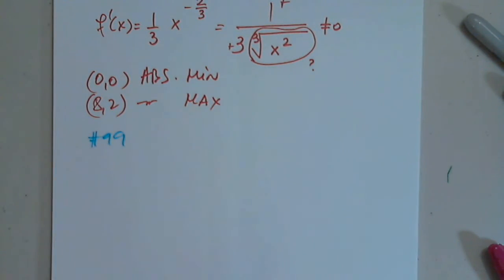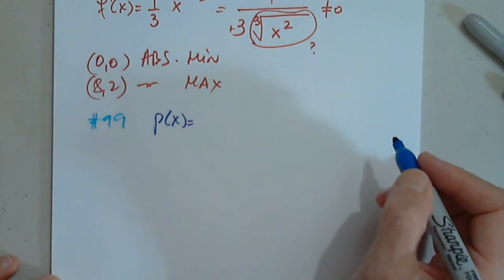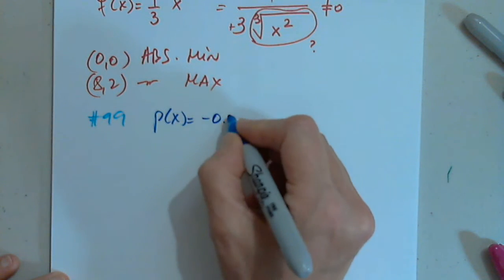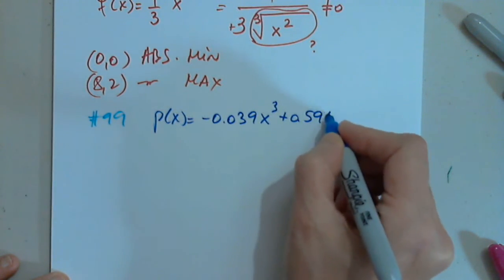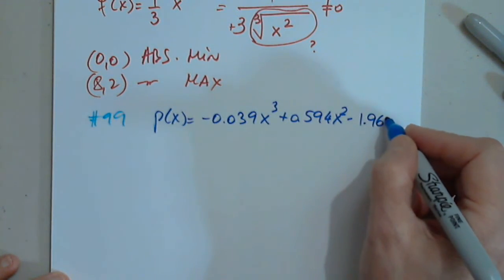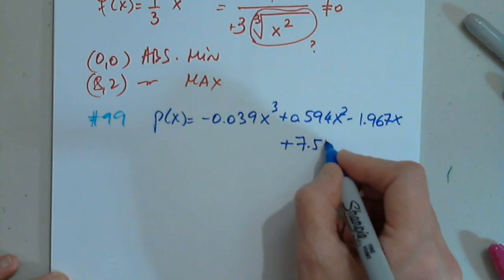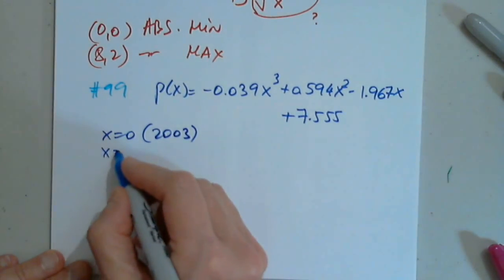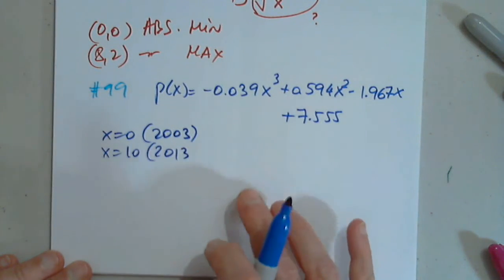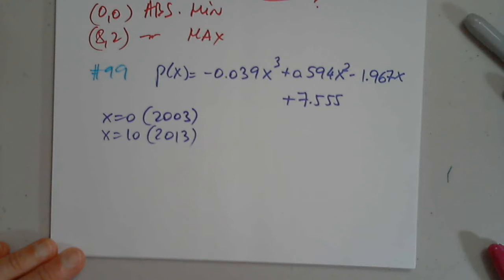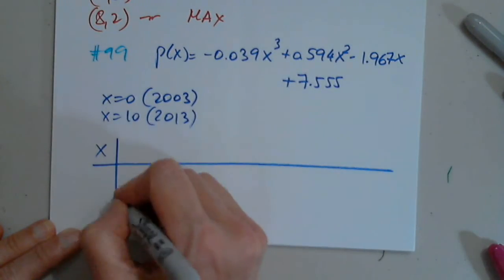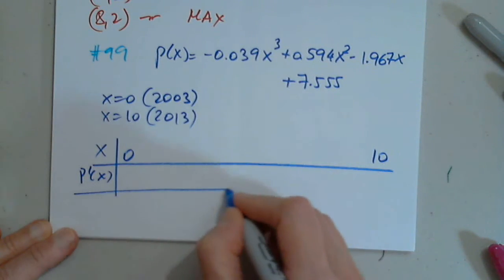Okay, I didn't hear anything, so I decided on my own. So P of X, it says percentage of unemployed workers in service occupations can be modeled by negative 0.039 X cubed plus 0.594 X squared minus 1.967 X plus 7.555. X is the number of years, so X equals 0 represents the year 2003, and X equals 10 will represent 2013. So where was the maximum? No problem. We will just simply repeat what we just did, from 0 to 10, and this is P prime, and this is P of X.